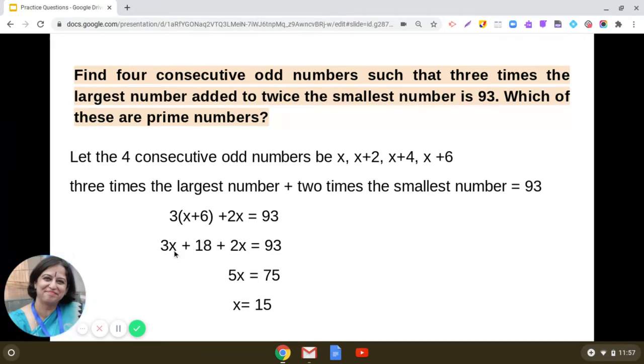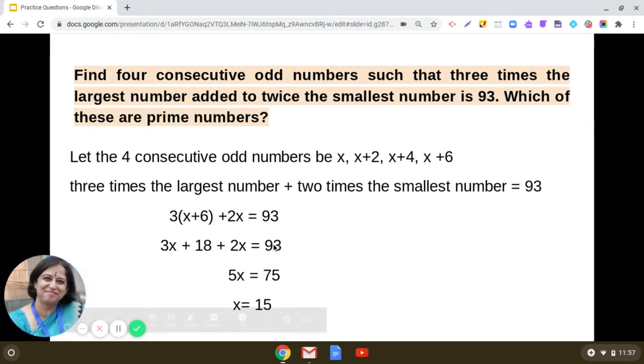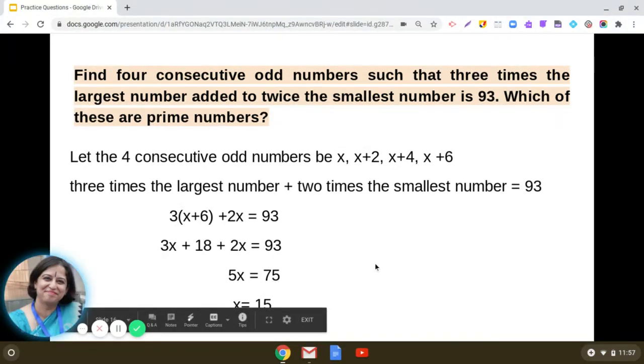Simplifying this we get 3x plus 18 plus 2x equals 93. Combine the like terms on the left hand side, we get 5x, and transpose 18 to the right side, so 93 minus 18 gives us 75. By solving this we get x equals 15.